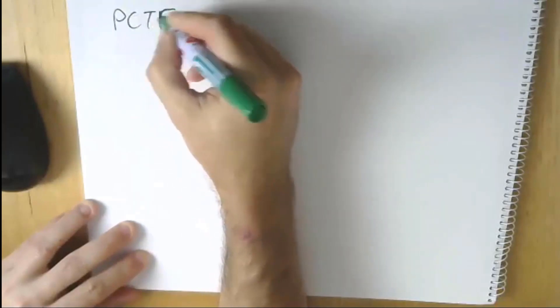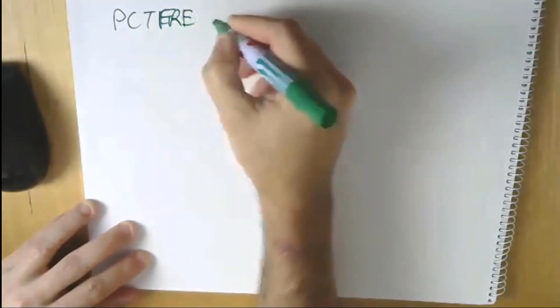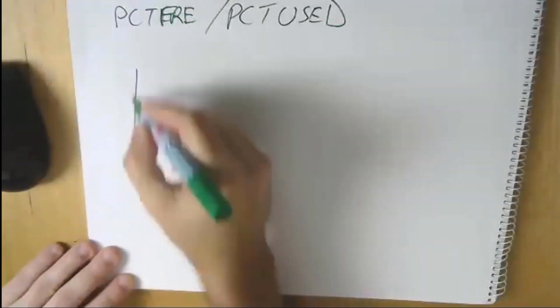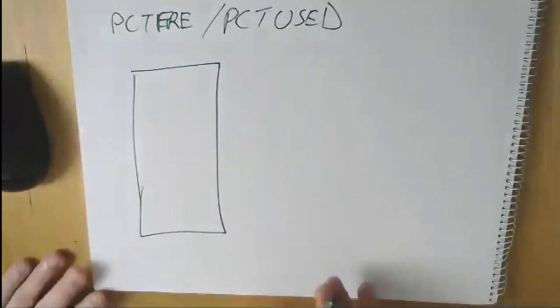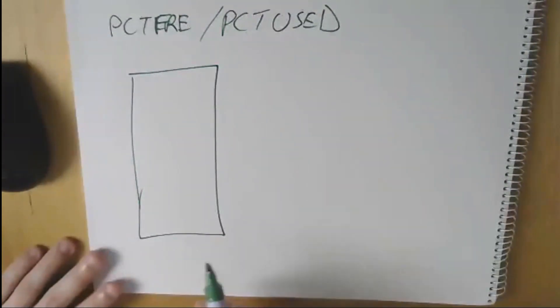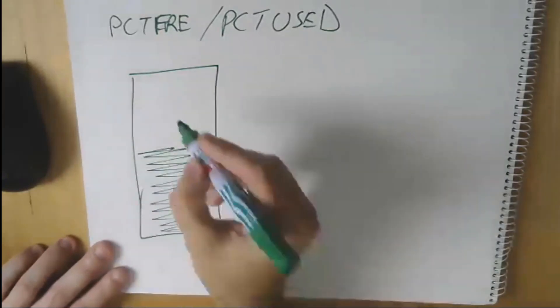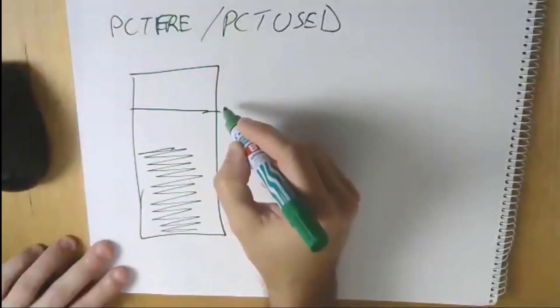We're going to start off with PCTFREE and PCTUSED. Most people are familiar with this, so we'll do this quickly. It's pretty simple. A block starts off empty and for lack of a better term, we fill it from the bottom. Eventually, it gets to a point which we call percent free.